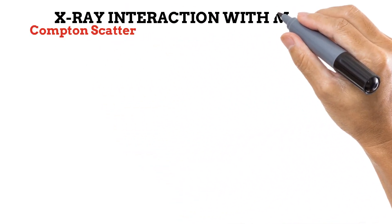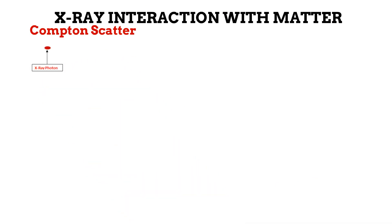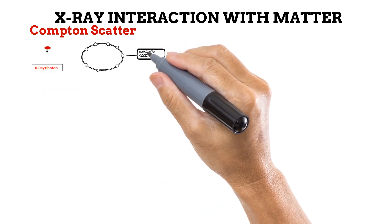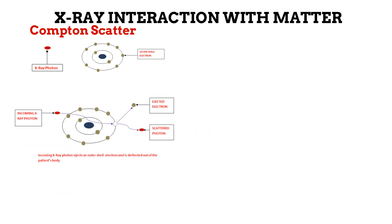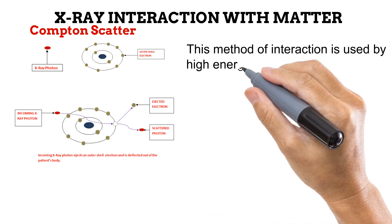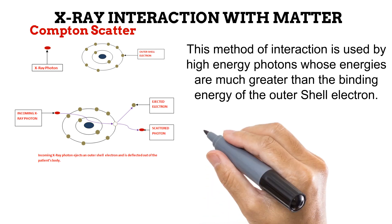Another type of interaction that can occur between a photon and a patient is Compton scatter. It occurs between a produced X-ray photon and an outer shell electron on the anatomy. In Compton scatter, the incoming X-ray photon, which has higher energy than in photoelectric effect, will eject an outer shell electron and still have enough energy to be deflected out of the atom and out of the patient's body. For this interaction to occur, the incoming X-ray photon must have an energy that is much greater than the binding energy of the outer shell of the patient's atom. This way, the photon can eject the orbital electron and still have enough energy to leave the atom and the patient's body.